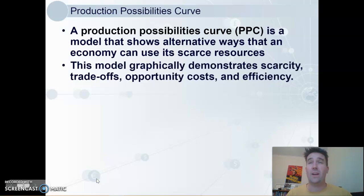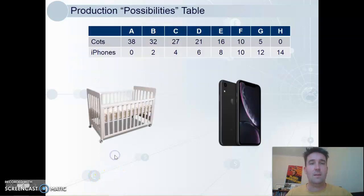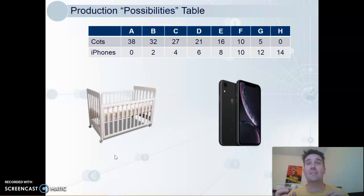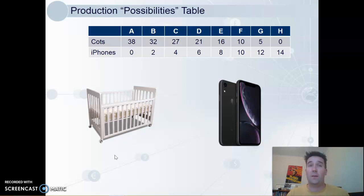This can show trade-offs, opportunity costs, and two important concepts: scarcity and efficiency. In this model, we assume — and economists love making assumptions — we assume that an economy can only make two goods. So in this case, cops and iPhones. As you can see, this is a very, very simplified view of an economy — only two things that they're making.